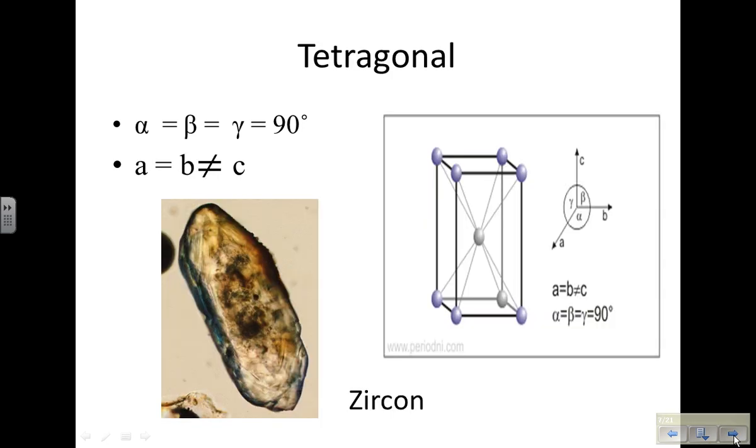In a tetragonal, all your angles are still 90 degrees, but one of your sides is not equal to the other.